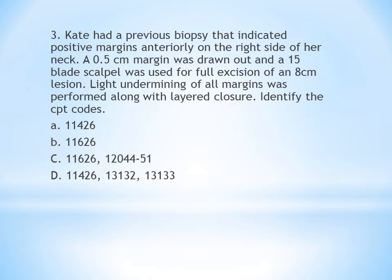Since there are two procedures, two codes will be needed, so options A and B are surely not the answer. The positive margin indicates a malignant condition. For the excision code, identify if it is benign or malignant — here it is clearly malignant. Then identify the site and body group as well as the diameter. The site is neck, and the diameter is 8 cm plus 0.5 cm margin, totaling 8.5 cm.